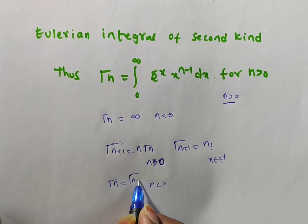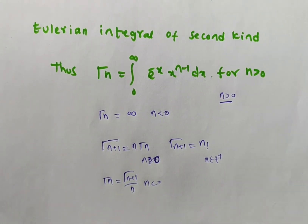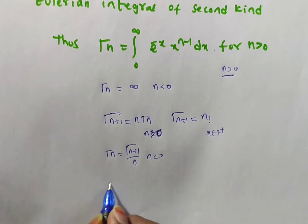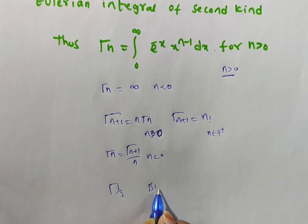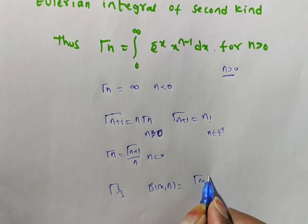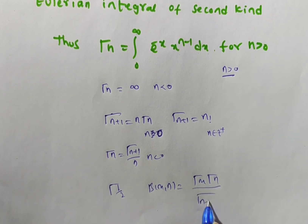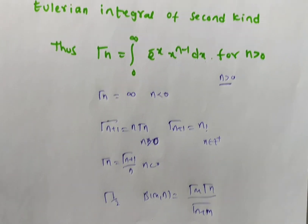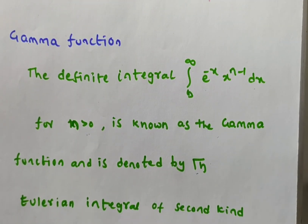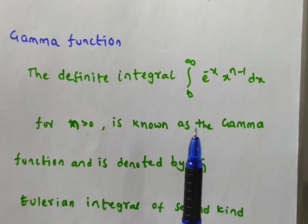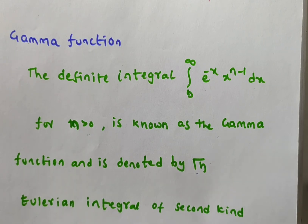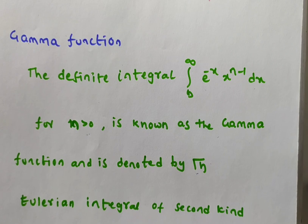We have different formulas to discuss, including Gamma(1/2). The relation between Beta and Gamma is: Beta(m, n) = [Gamma(m) * Gamma(n)] / Gamma(m + n). The Gamma function is also called the Eulerian integral of the second kind — the first kind being the Beta function. In the next video we will discuss properties of the Beta function and problems on Beta and Gamma.